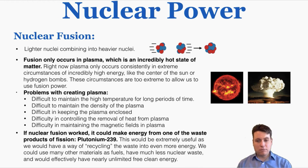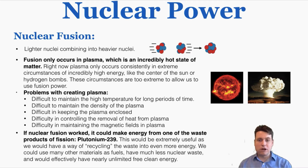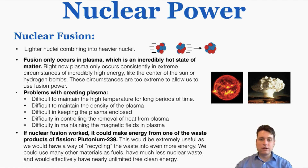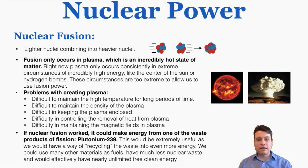Nuclear fusion is a more advanced, futuristic type of power we don't have access to right now. It only occurs in plasma — an incredibly hot state of matter — which currently only occurs consistently under extreme circumstances of incredibly high energy, such as the center of the sun or hydrogen bombs. These circumstances are too extreme to allow us to use fusion power right now. If nuclear fusion worked, it could create energy from plutonium-239, a waste product of fission — so we could recycle nuclear waste into more power. We could use many other materials as fuels, have much less nuclear waste, and effectively have nearly unlimited free clean energy. Scientists are working hard on this, but breakthroughs in the next few years seem unlikely.